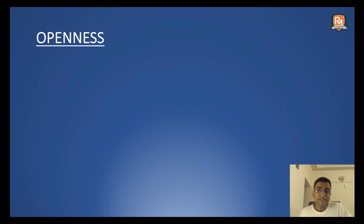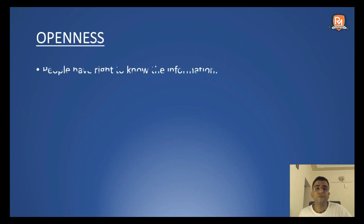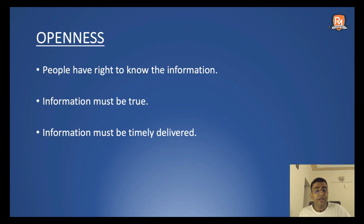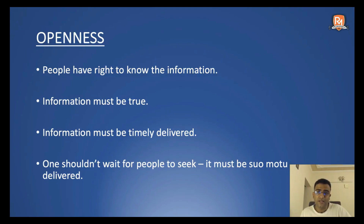So let us look into what is openness. Openness basically means that the government is open — the government is willing to disseminate its information to the people suo moto, or willingly. If we summarize the core principles of openness: people have a right to know the information that the government possesses; this information must be true; it must be timely delivered; and most importantly, it's not that people should come and ask the government — rather, the government should suo moto deliver the information by itself. The government puts the information on the platter and people come and have a look at it. This is an example of an open government.